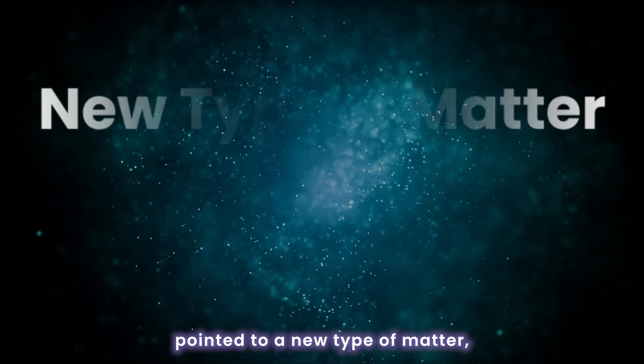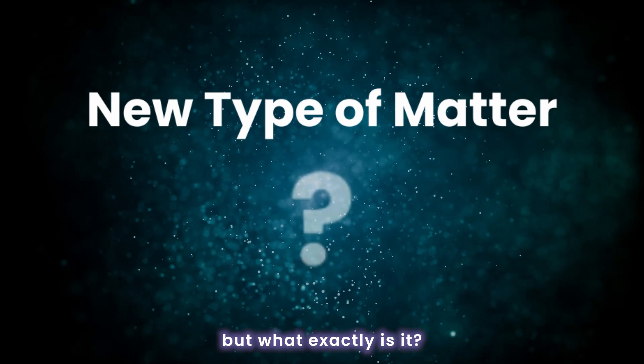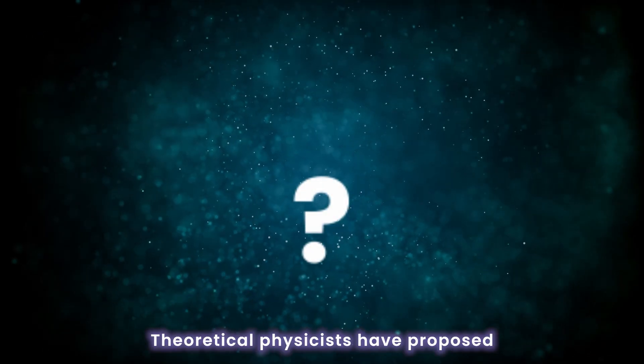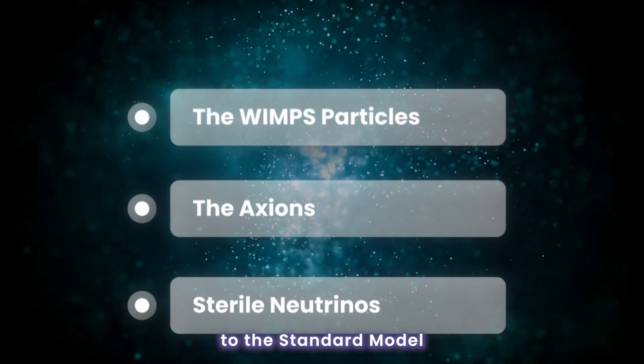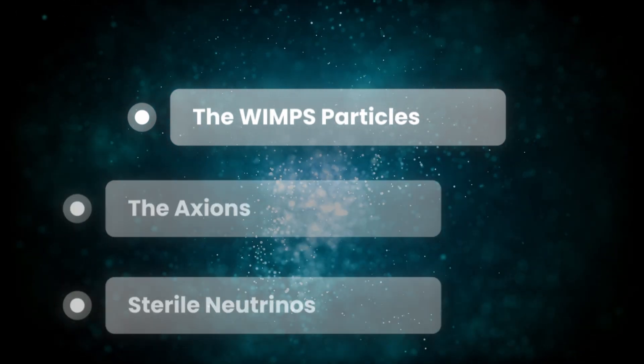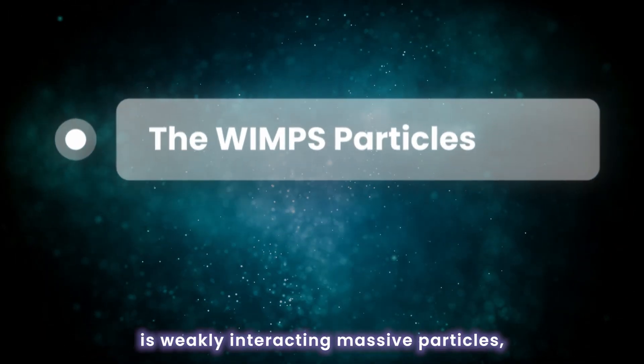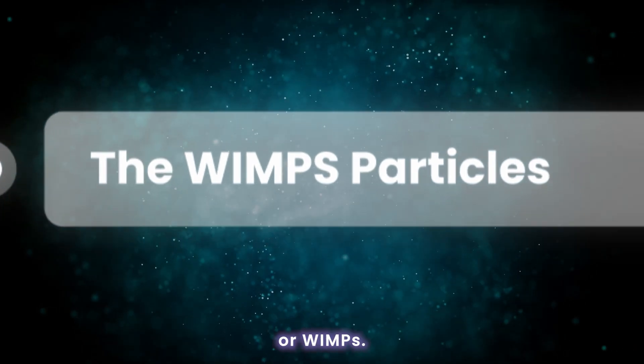The accumulated evidence pointed to a new type of matter. But what exactly is it? Theoretical physicists have proposed several possible particles, based on extensions to the standard model of particle physics. One major idea is weakly interacting massive particles, or WIMPs.